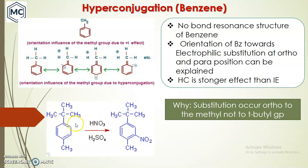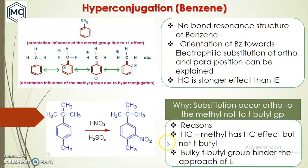Further evidence comes from electrophilic substitution of a disubstituted benzene having one tertiary butyl substituent and one methyl substituent. When nitrated with a nitrating mixture, the nitration product forms at the ortho position of the methyl group, not the tertiary butyl group. There are two reasons: first, the methyl group has three alpha hydrogens and due to hyperconjugation directs to its ortho position; second, the bulky tertiary butyl group sterically hinders the approach of the electrophile.